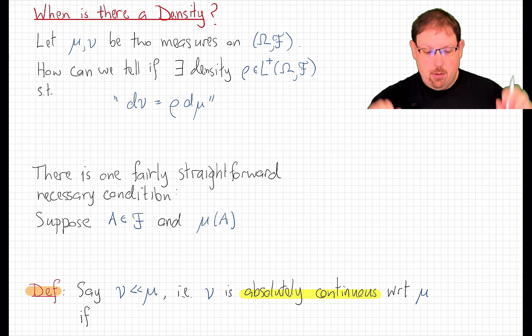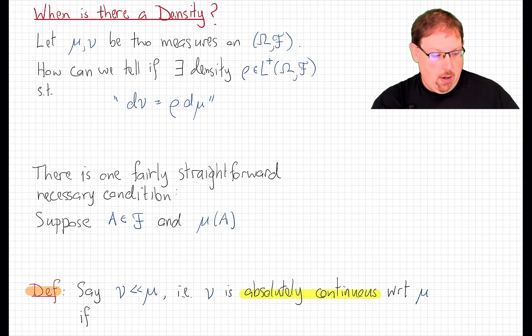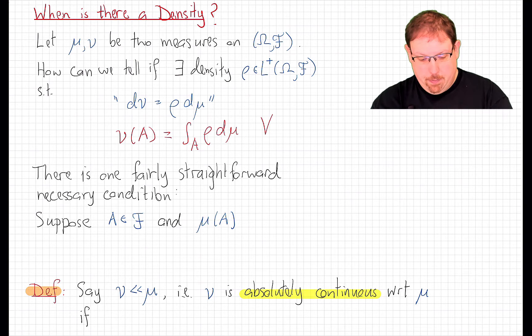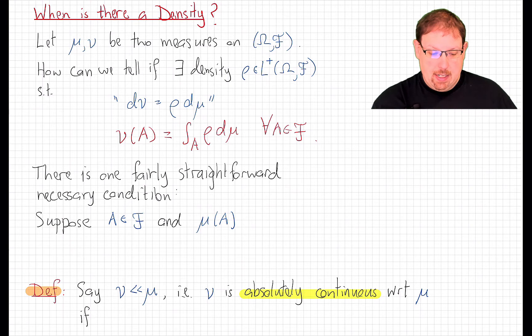That is to say, how can we tell if there is some non-negative measurable function rho such that d nu is rho d mu? That's shorthand, as we've discussed, for nu being evaluated on any measurable set, taking the value integral over that set of rho d mu. When such a density function exists, we perhaps have more tools to calculate the measures. Now, there is one fairly straightforward condition that certainly must hold if such a density is going to exist.